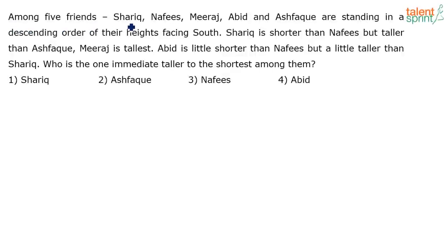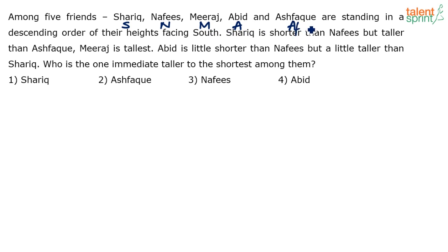Among five friends — Sharik, Nafis, Miraj, Abid, and Ashwaq — are standing in a descending order of their heights facing south. Let's assign variables: Sharik is S, Nafis is N, Miraj is M, Abid is A, and Ashwaq is AF, so we don't get confused. So S, N, M, A, and AF are standing in a descending order of their heights facing south.